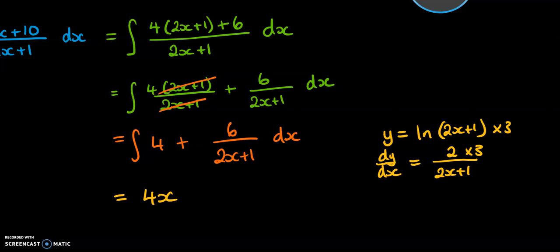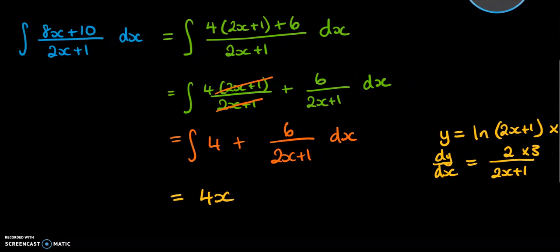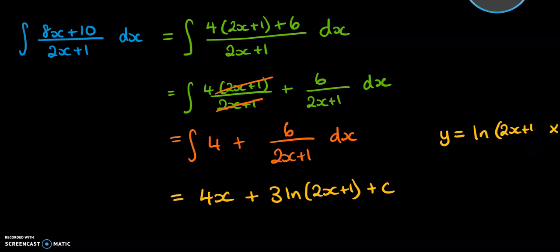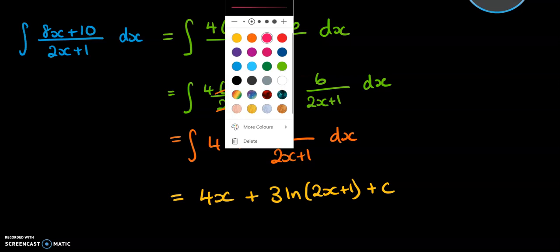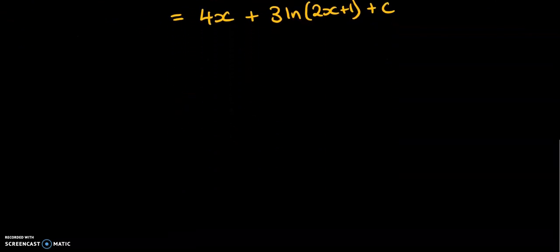So instead of starting with ln 2x plus 1, we need to start with 3 ln 2x plus 1. So back over here to the integral, we have this is now 4x plus 3 ln 2x plus 1 plus c. Alright, so we'll leave that as example 1, and we'll do another example down below.